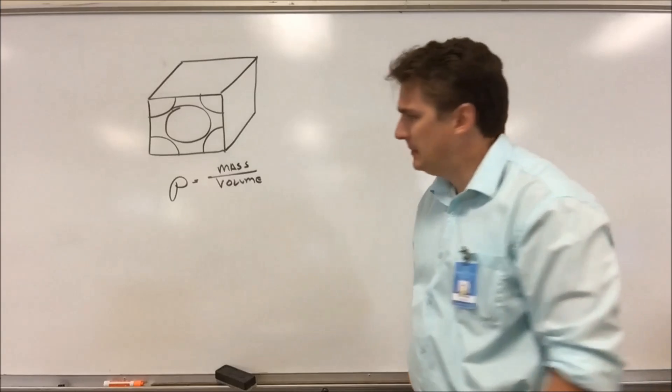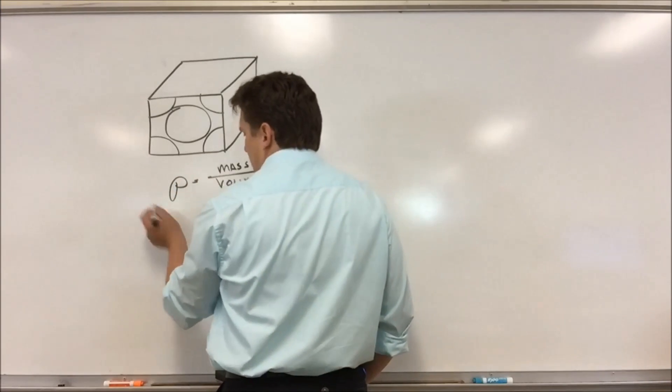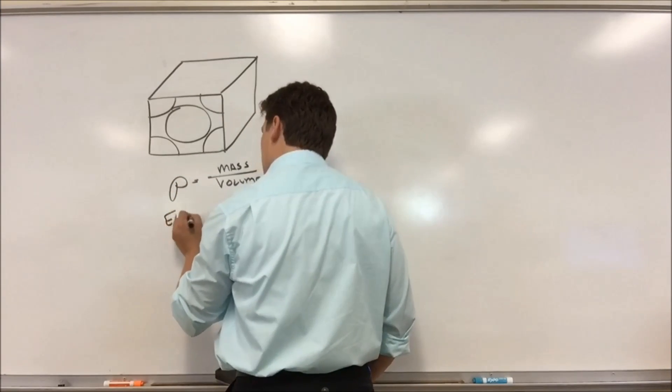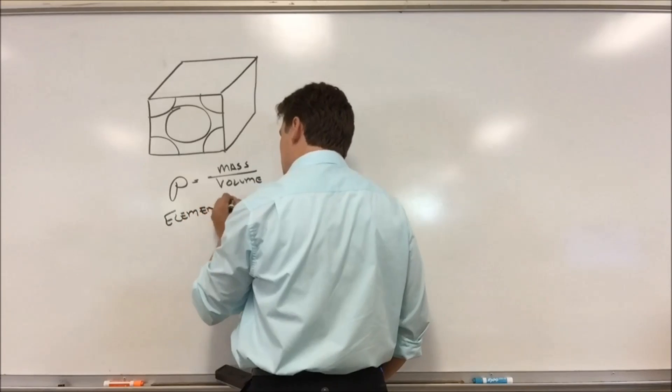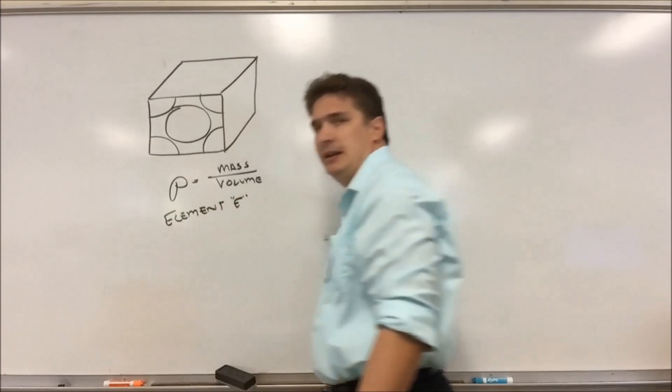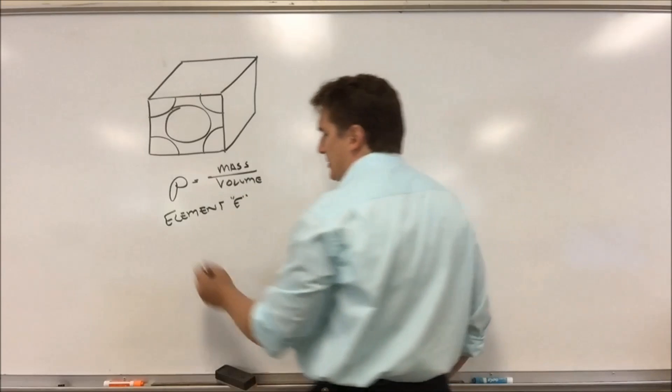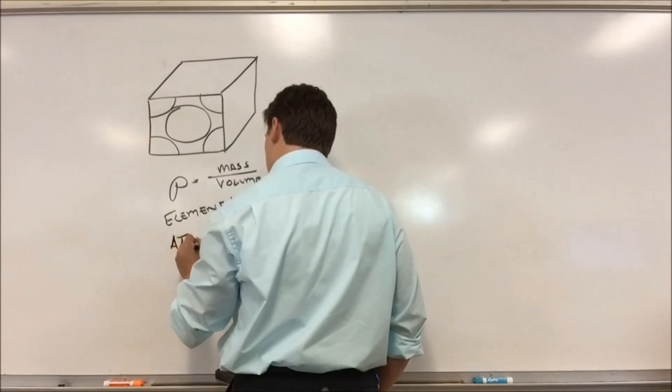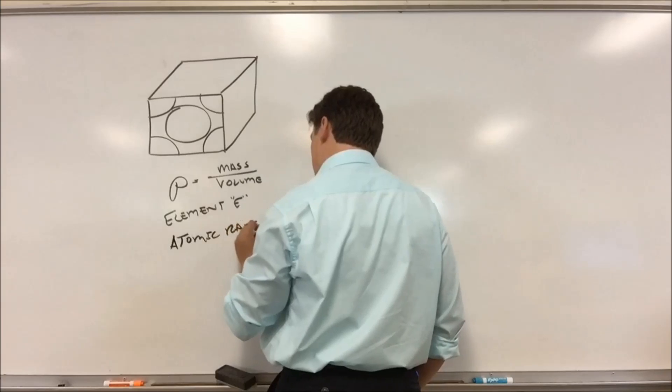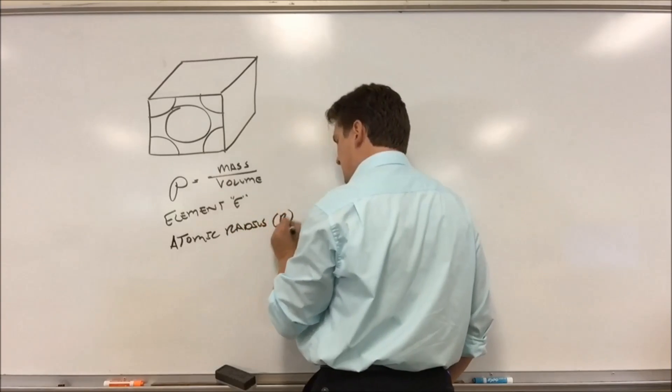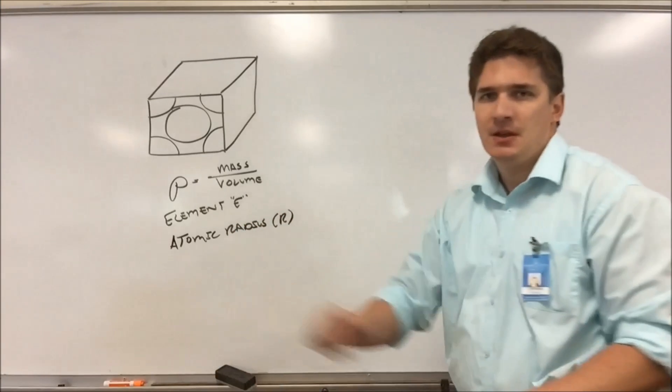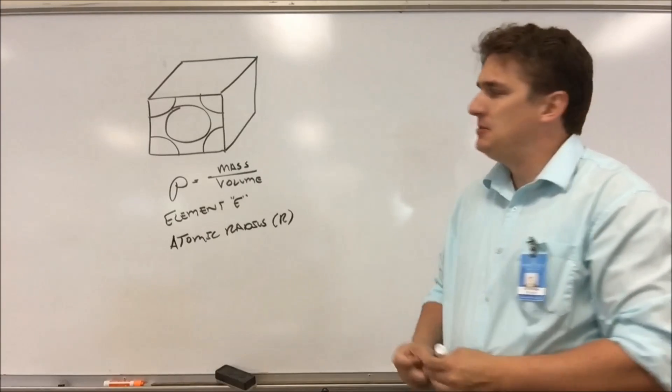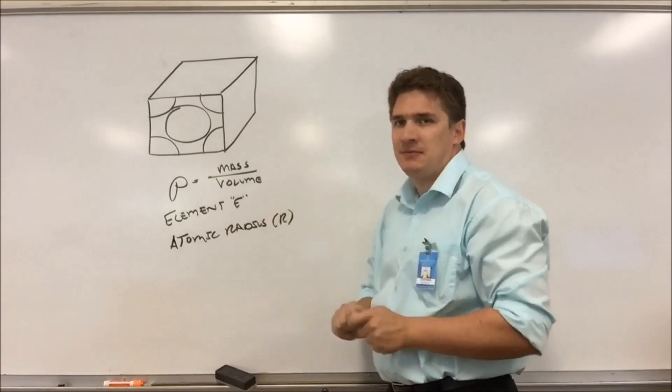So let's say we have some atom, and we'll just say some element E. And this element E has an atomic radius of big R. So these are going to be the two things we use to figure out the mass and the volume.